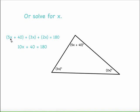This time, I'm going to combine like terms. 5X plus 3X plus 2X gives me 10X. I still need to include the plus 40 and it still equals 180. Then we're going to subtract 40 from both sides and divide both sides by 10 to get X equals 14. Since this problem just asked us to solve for X, we're done with this particular problem.